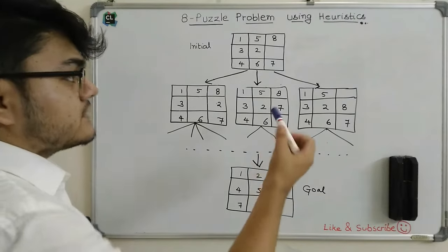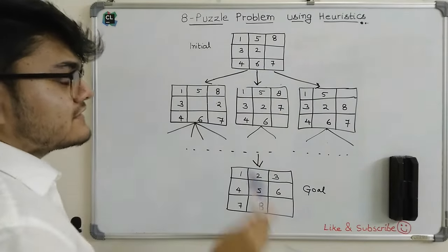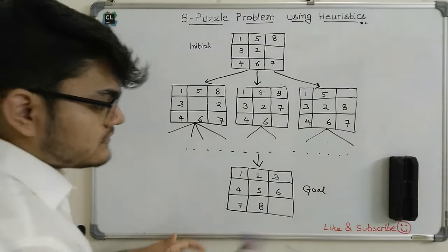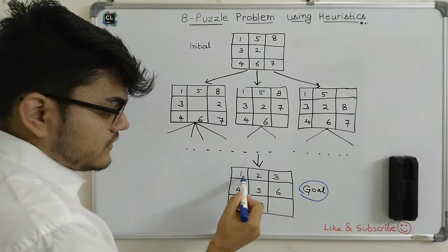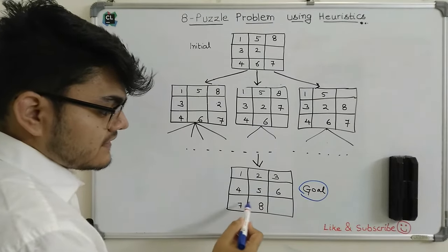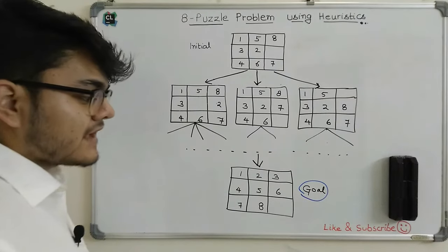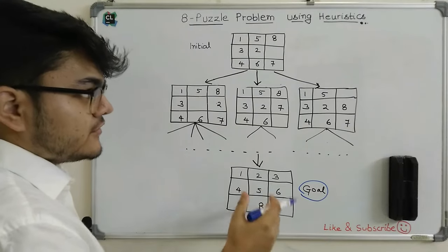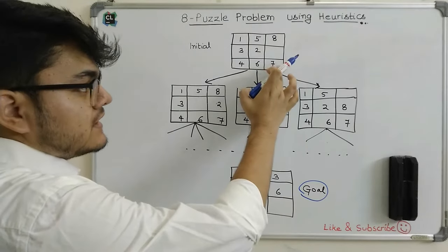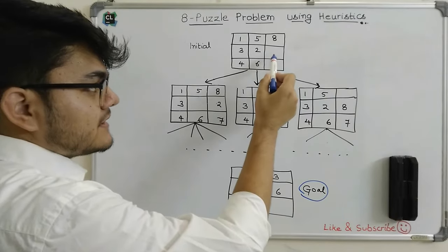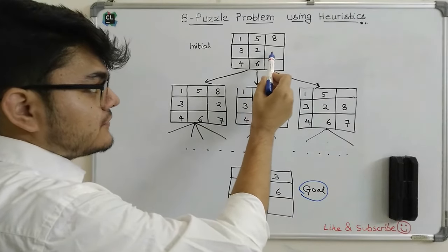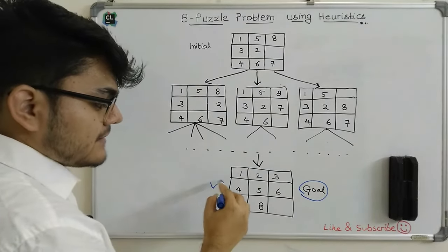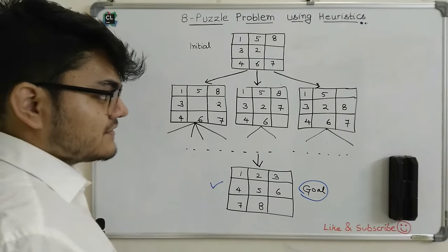Basically what we are trying to do is understand how an AI agent will solve this particular problem — it is actually a game. Most AI applications are based on game playing, for example chess. I have picked a very simple game, the 8 puzzle game, and we are going to see how we can use a heuristic function to make sure the AI agent does not traverse all branches inside of the problem.